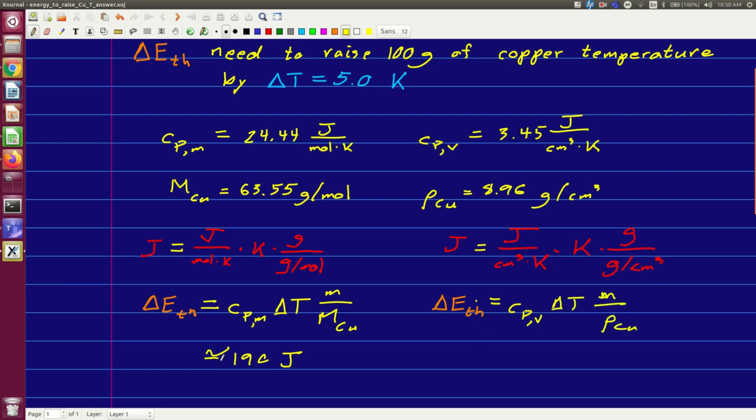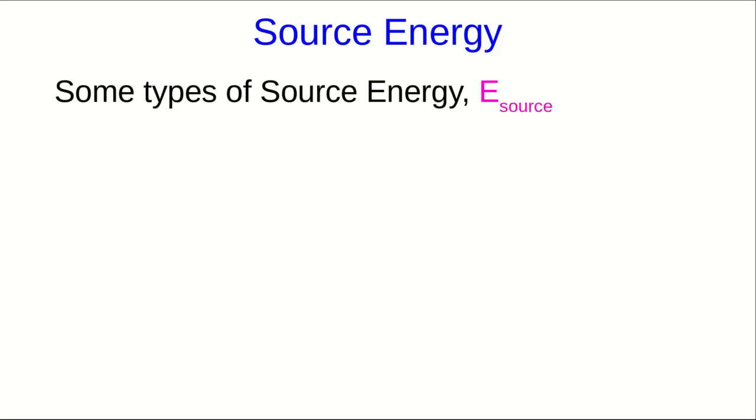And again, when you plug in the numbers, you're going to get around 190 joules. One of the main themes throughout this course is going to be how we, and by we I mean humanity, convert various forms of source energy into other forms of energy that we can use. So let's get a better sense for the nature of some types of source energy.